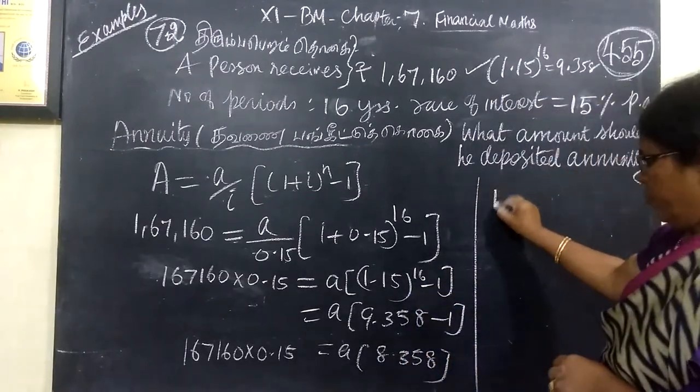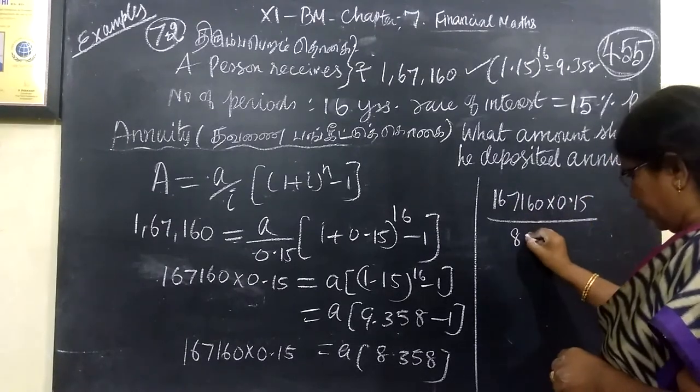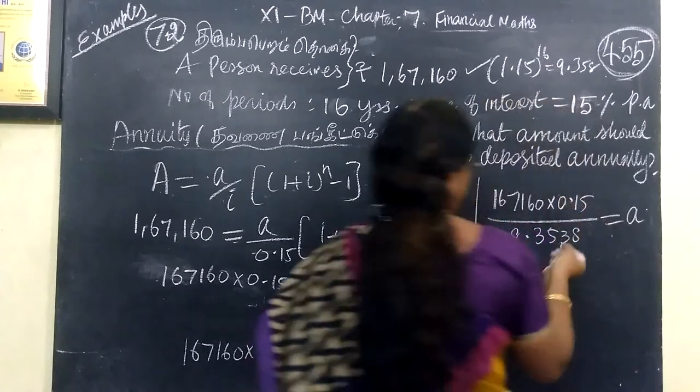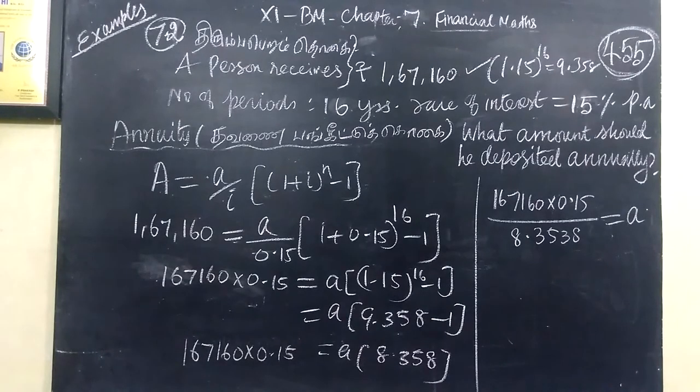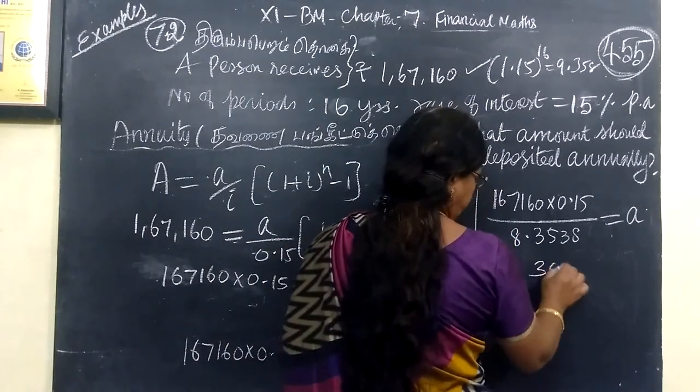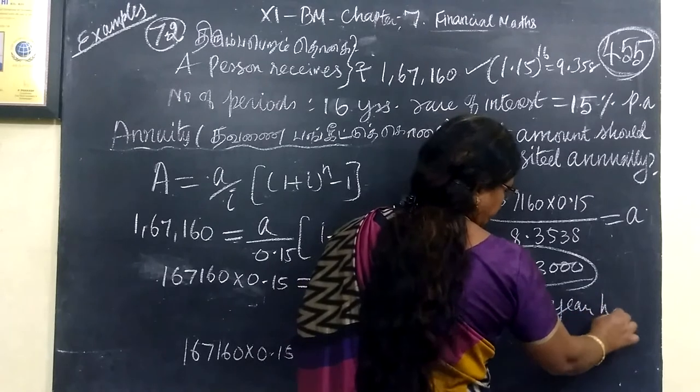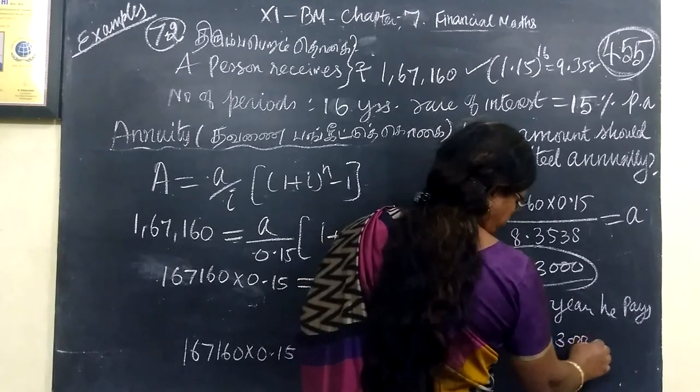167,160 times 0.15 divided by 8.358. The value of A equal to 3,000. He pays rupees 3,000.